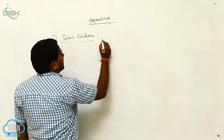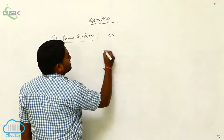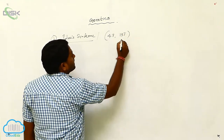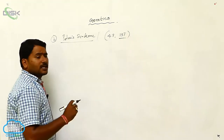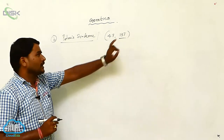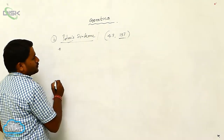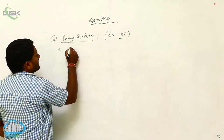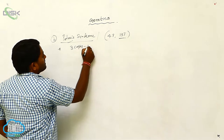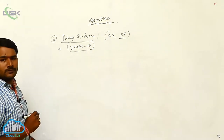Patau syndrome: the total number of chromosomes is 47, characterized by the presence of an extra copy of the 13th chromosome. There are three copies of the 13th chromosome present, so this is called trisomy 13.